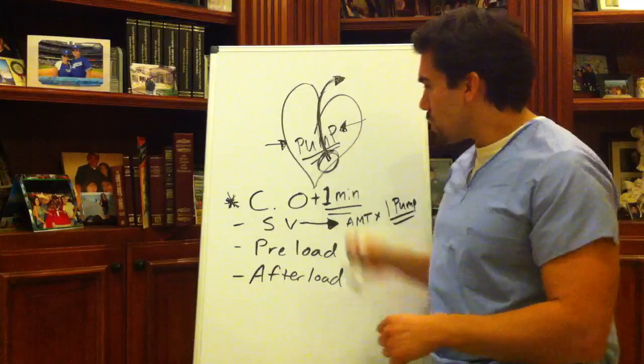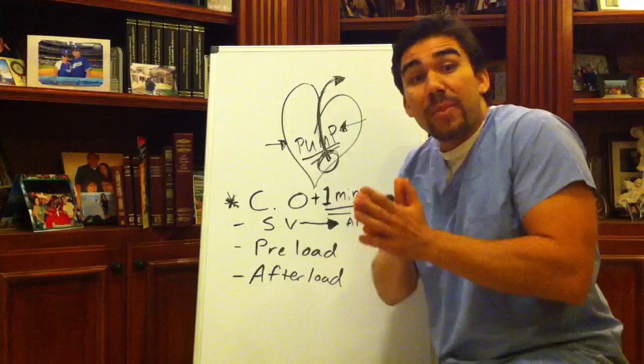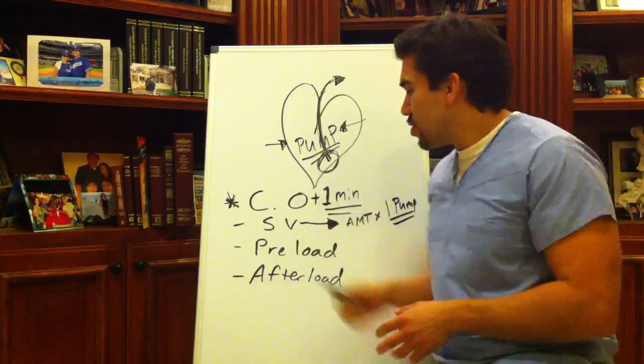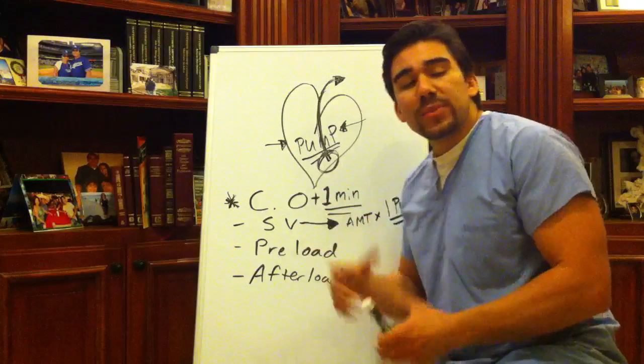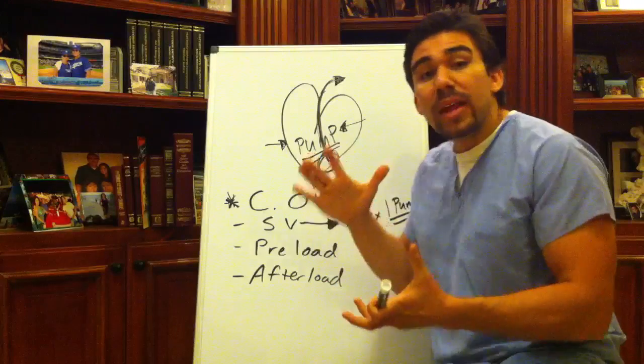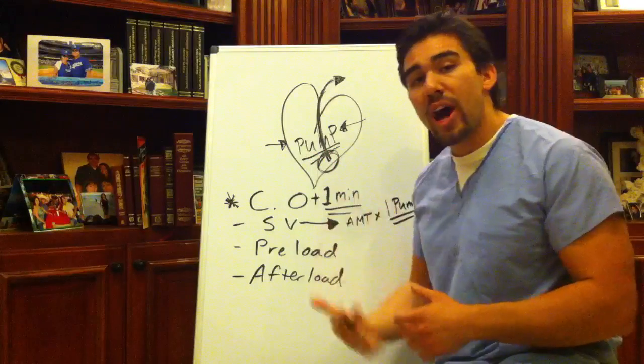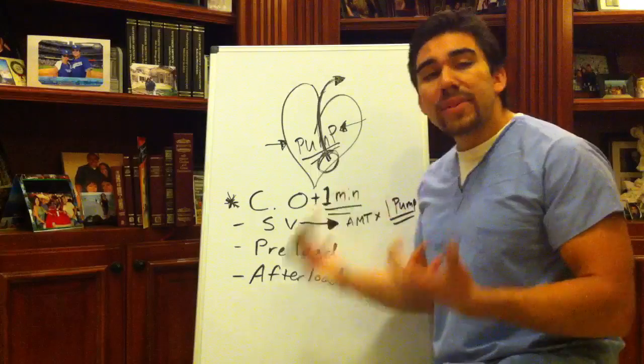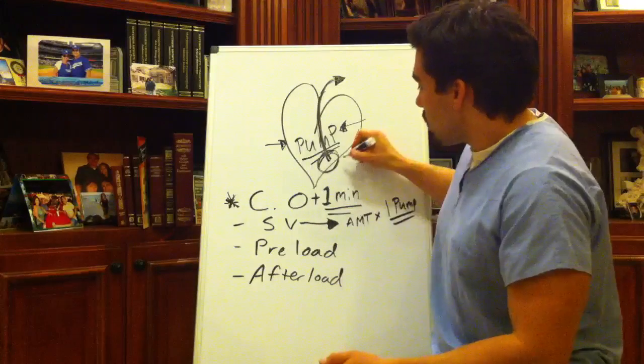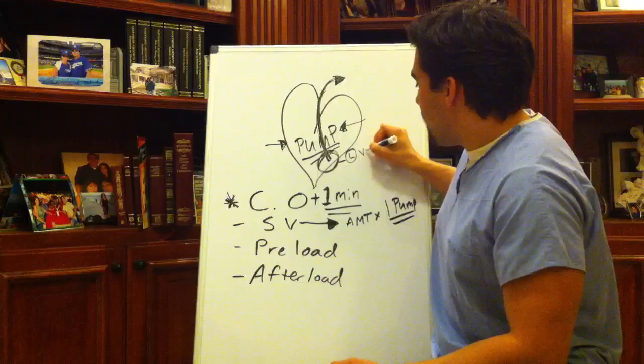Does that make sense? So that left ventricle now begins to swell. So your stroke volume becomes decreased when it's trying to push blood but it can't. Your cardiac output now is being compromised. And what happens to the left ventricle? We call that left ventricular hypertrophy.